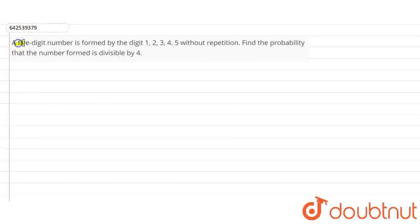The question says that a 5-digit number is formed by the digits 1, 2, 3, 4 and 5 without repetition. So we have to find the probability that the number formed is divisible by 4.